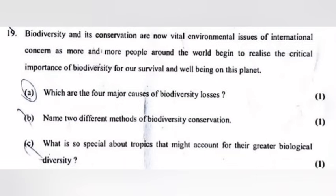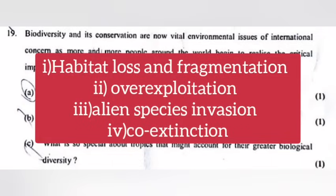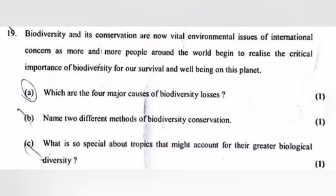Question 19A: Which are the four major causes of biodiversity losses? Answer: Habitat loss and fragmentation, overexploitation, alien species invasion, co-extinction. Question 19B: Name two different methods of biodiversity conservation. Answer: Ex-situ conservation and in-situ conservation.